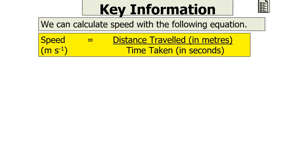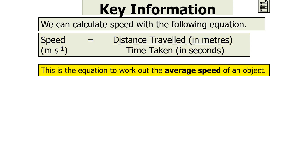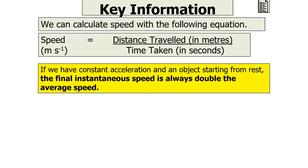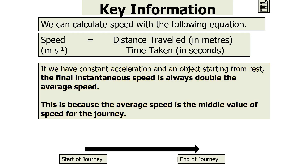We can calculate speed with the following equation: speed in metres per second equals the distance travelled in metres divided by the time taken in seconds. Speed is a scalar — it doesn't involve direction. This equation gives the average speed of an object. If an object has constant acceleration and starts from rest, the final instantaneous speed is always double the average speed, because the average speed is the middle value between zero and the final speed.